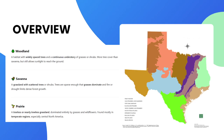Woodlands are a habitat with widely spaced trees and a continuous understory of grasses and shrubs. It's not like an Amazon jungle — sunlight can actually reach the ground. Savannas are grasslands with scattered trees and shrubs, where trees are sparse enough that grasses dominate and fire or drought limits dense forest growth.